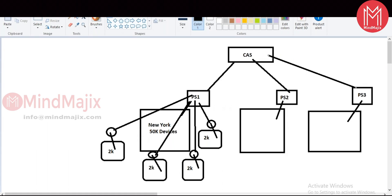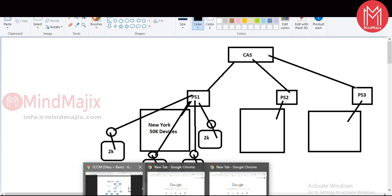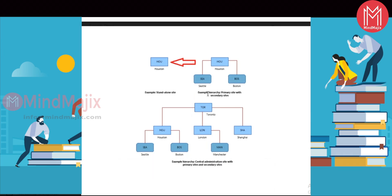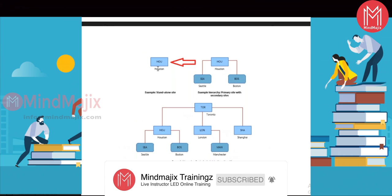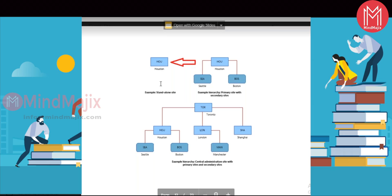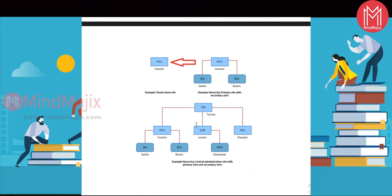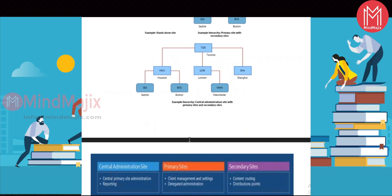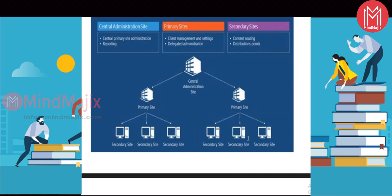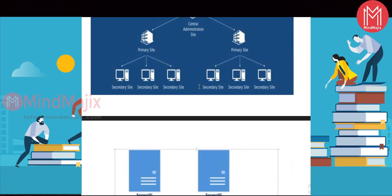To summarize the hierarchy: if you have just one headquarters — say, in Houston — you need only one Primary Site. If you have a headquarters plus branch offices, you have Primary plus Secondary Sites. If you have a large organization like TCS, IBM, Deloitte, or Microsoft with more than 100,000 devices, you use multiple Primary Sites and Secondary Sites, with a Central Administration Site at the top of the hierarchy.